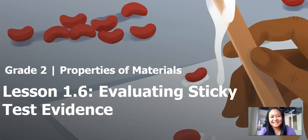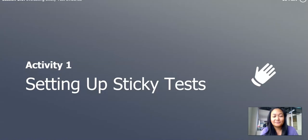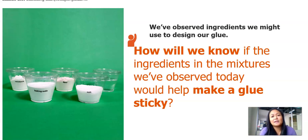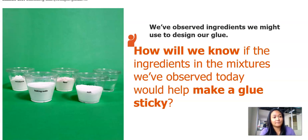Hi everybody, it's Ms. Cristobal again, and we're on Lesson 6: Evaluating Sticky Test Evidence. Our first activity today in this lesson is to set up our sticky tests. You might remember from last science lesson that you observed some of the substances that you can see on the picture. And now we want to know how can we make sure that these ingredients we've observed make a glue sticky?